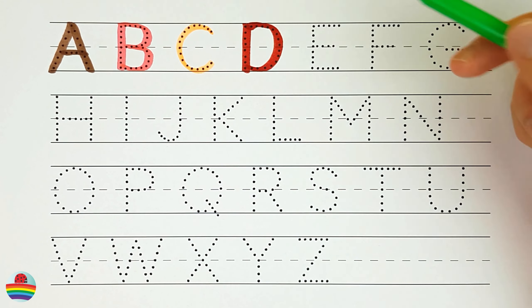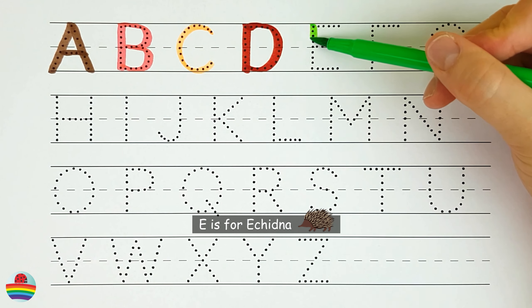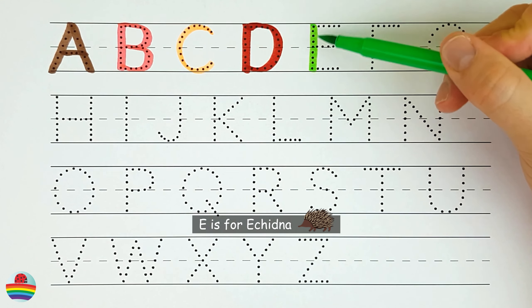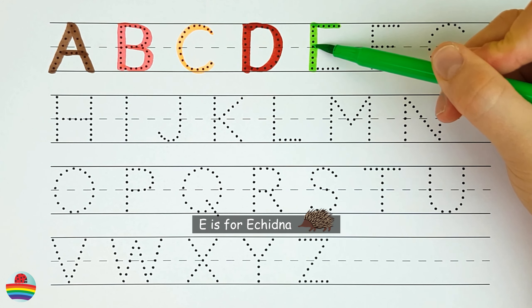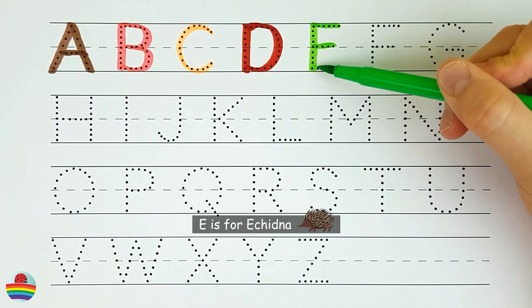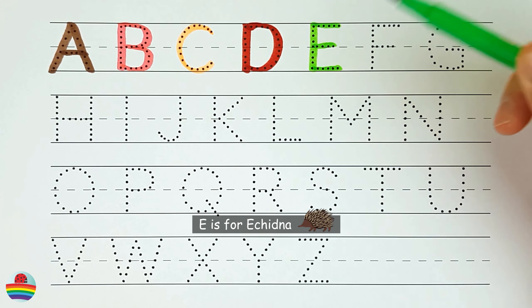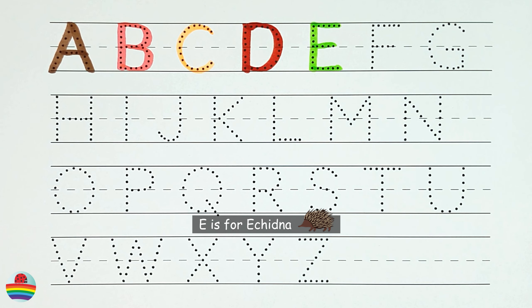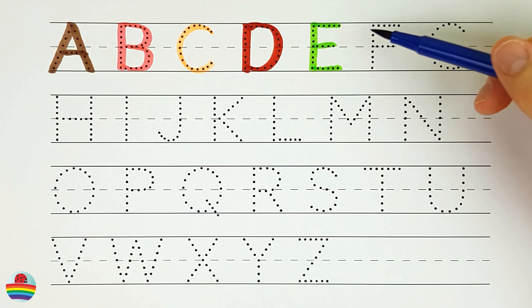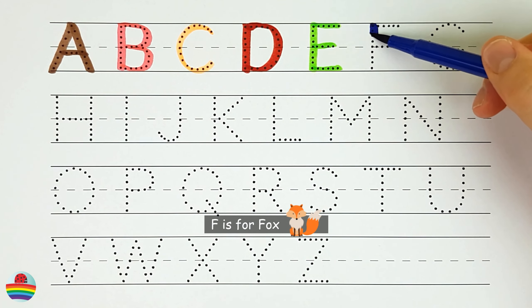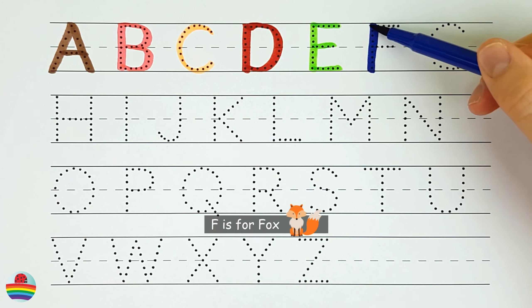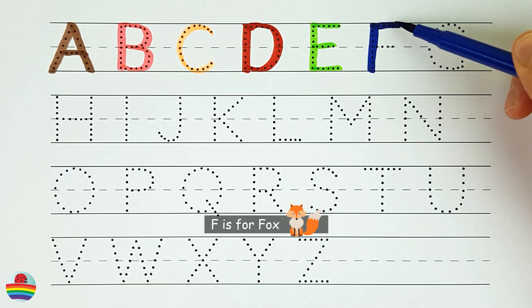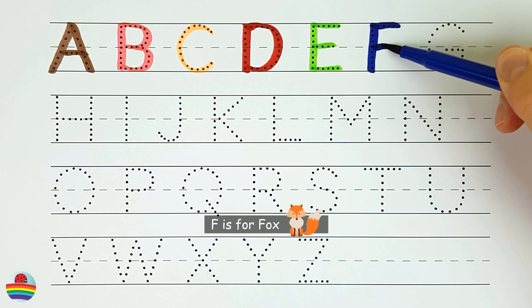E. E is for echidna. E. F. F is for fox. F.